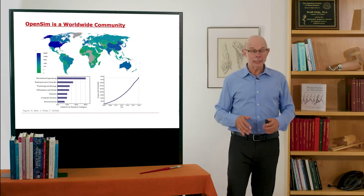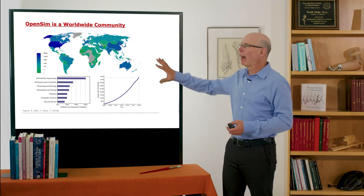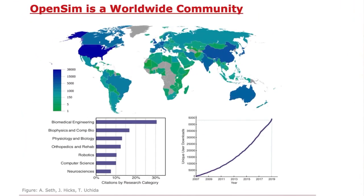That's possible because OpenSim is a worldwide community. Here's just a map of people who are using the OpenSim documentation. The users come from a variety of disciplines: biomedical engineering, biological cybernetics, orthopedics, rehab, robotics, computer science. So it's a wide variety of individuals who are not only using the software but also contributing algorithms, contributing models, and supporting each other in advancing human movement research. There's a growing number of individuals—you can see that's continuing to increase over time.